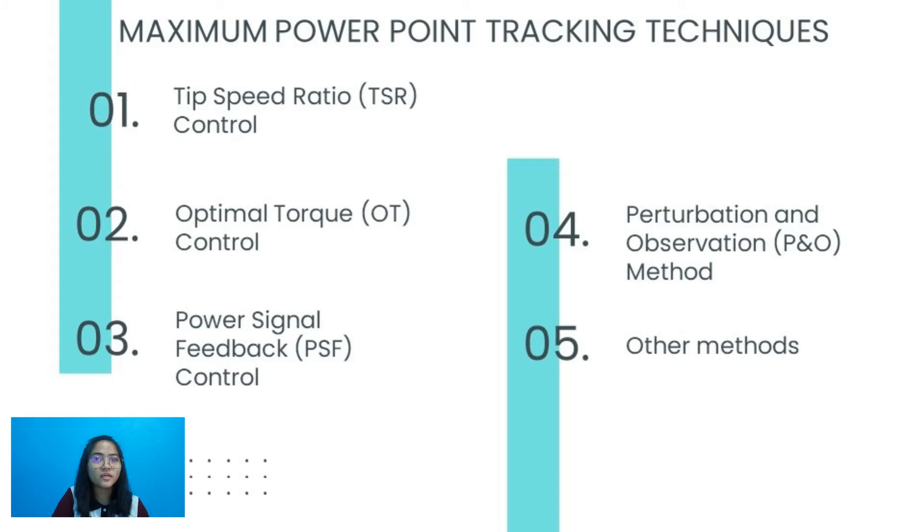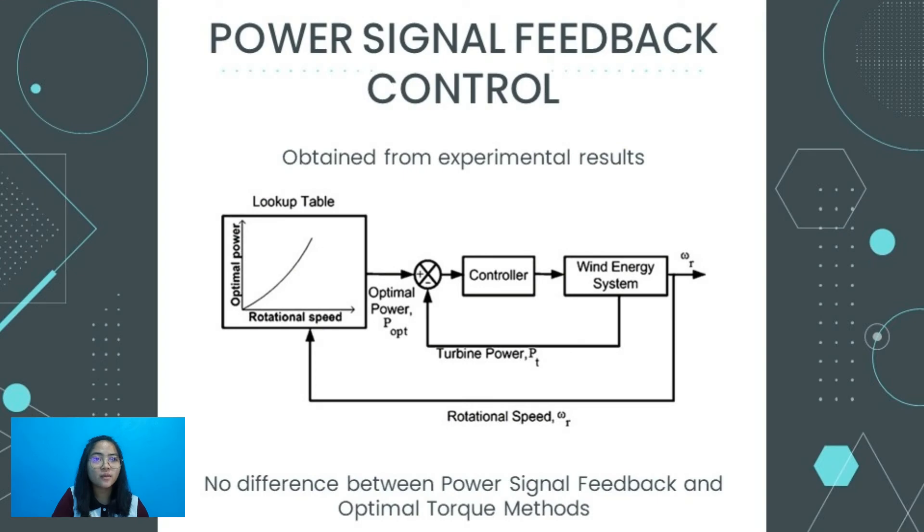Next is the power signal feedback or PSF control method. So the reference optimum power curve of the wind turbine should be obtained first from the experimental results unlike in OT control method. So this is the block diagram of the PSF control. The data points of maximum power output and the corresponding speed of the wind turbine are recorded in a lookup table. So there is no difference between PSF and the previous method which is the OT control with regard to performance and complexity of implementation.